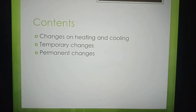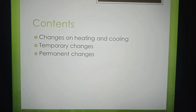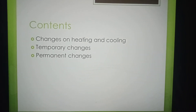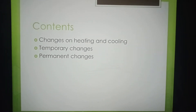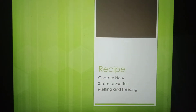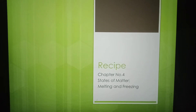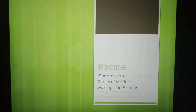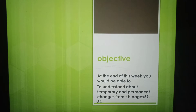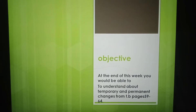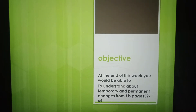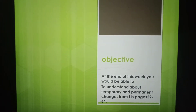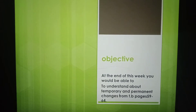Contents include changes on heating and cooling, temporary changes, and permanent changes. The topic is chapter number four: states of matter, melting and freezing. The objective is that at the end of this week you will be able to understand about temporary and permanent changes from textbook pages 59 to 64.